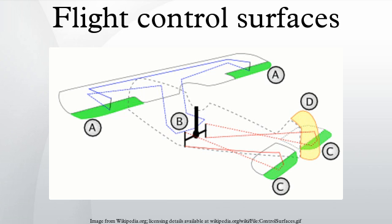Spoilers are sometimes called lift dumpers. Spoilers that can be used asymmetrically are called spoilerons and can affect an aircraft's roll.